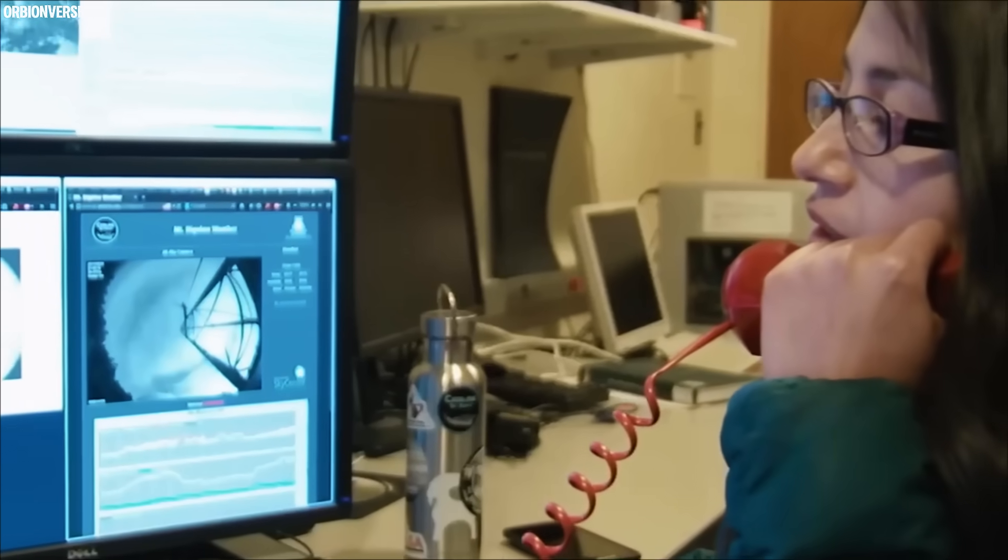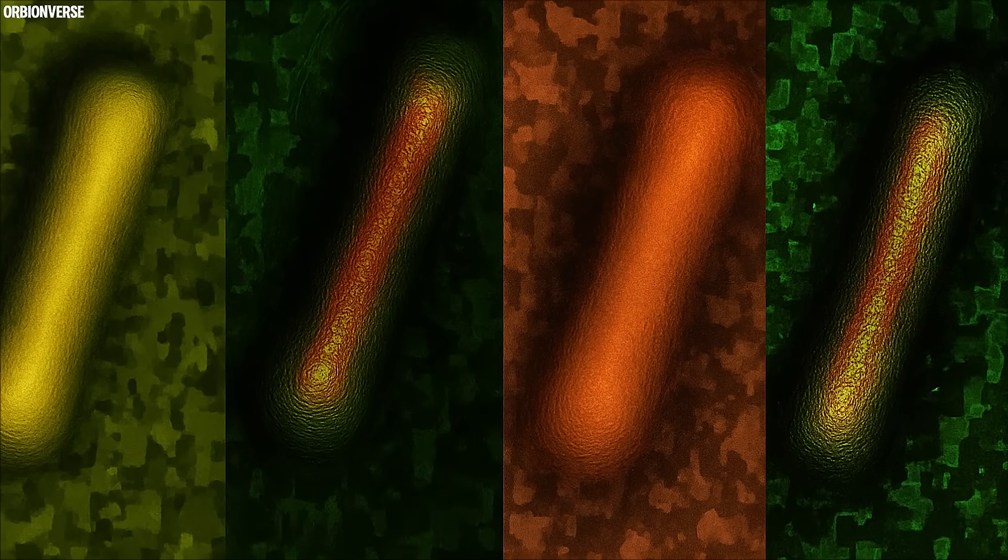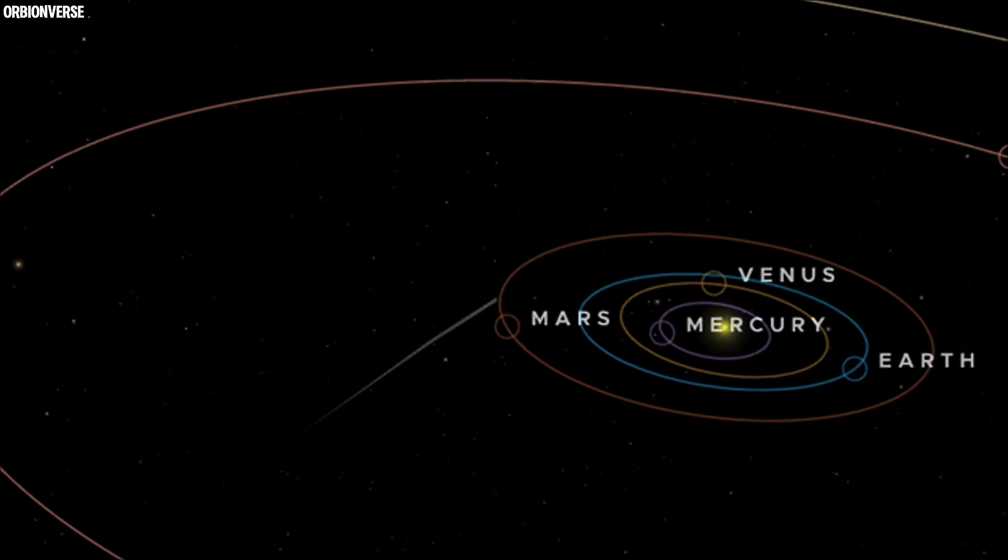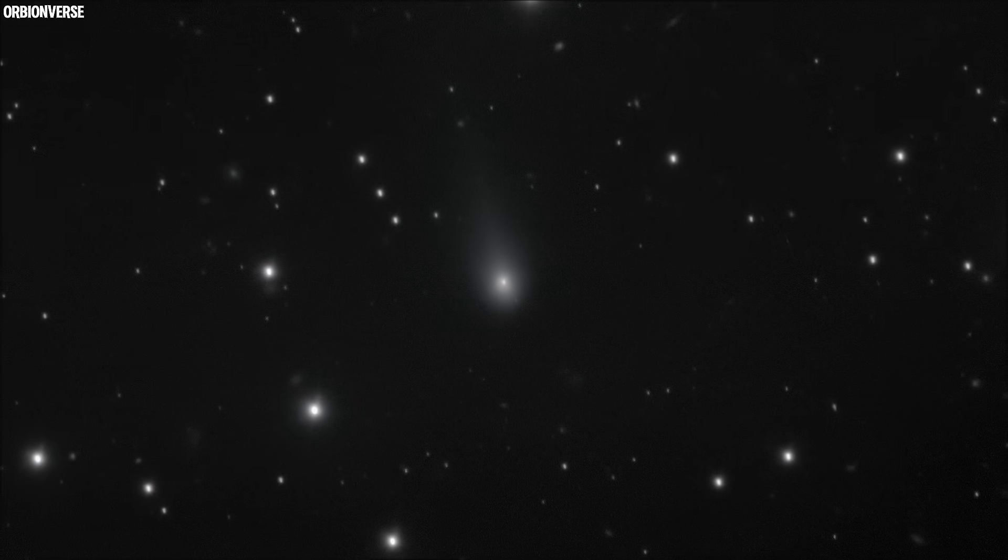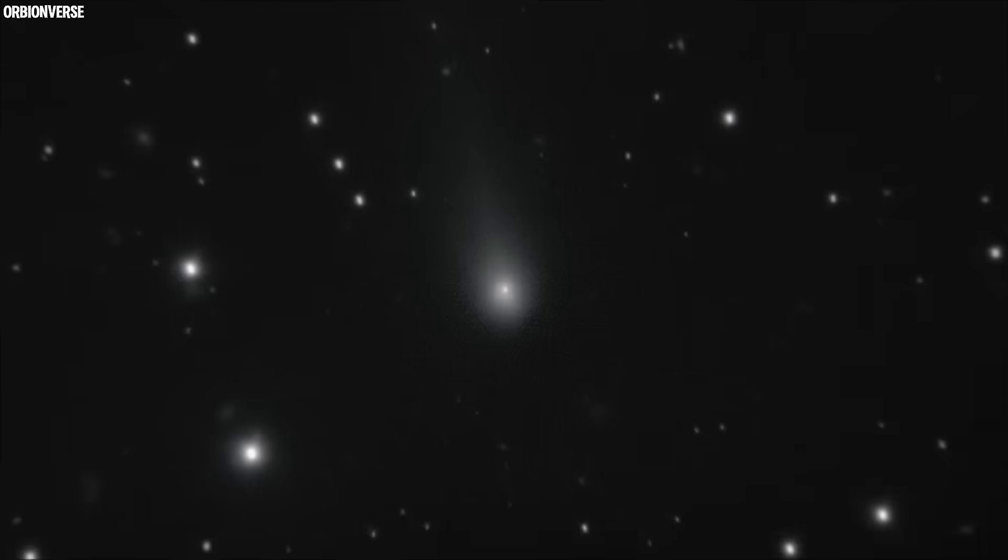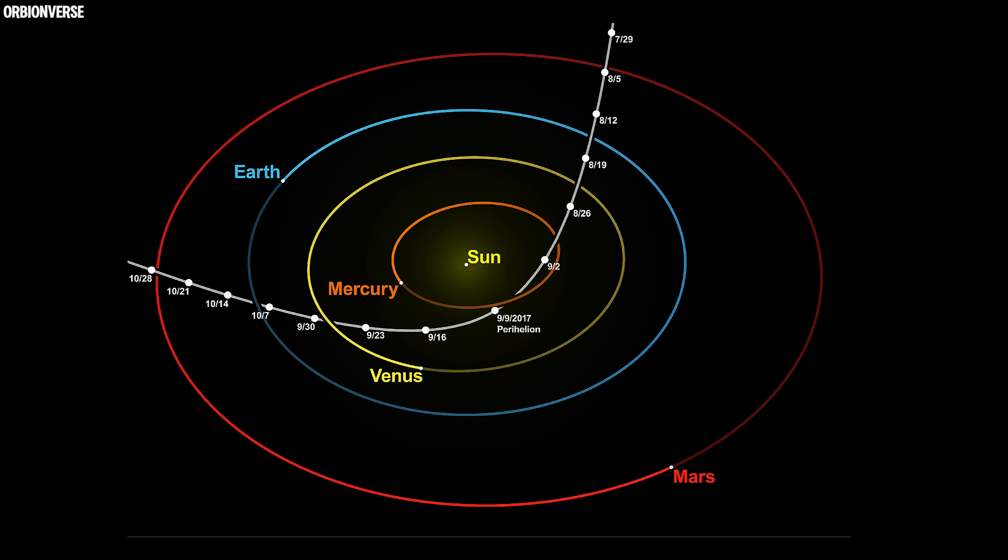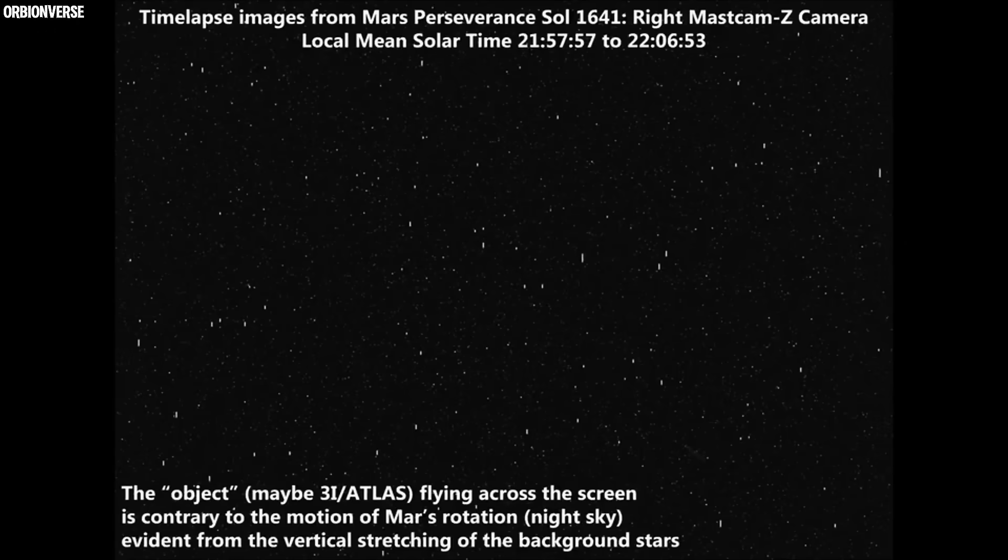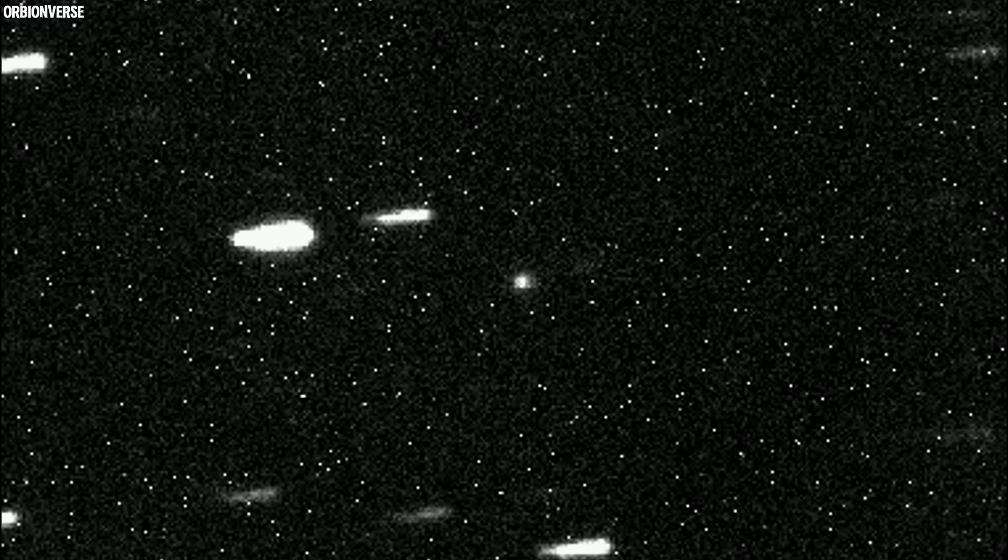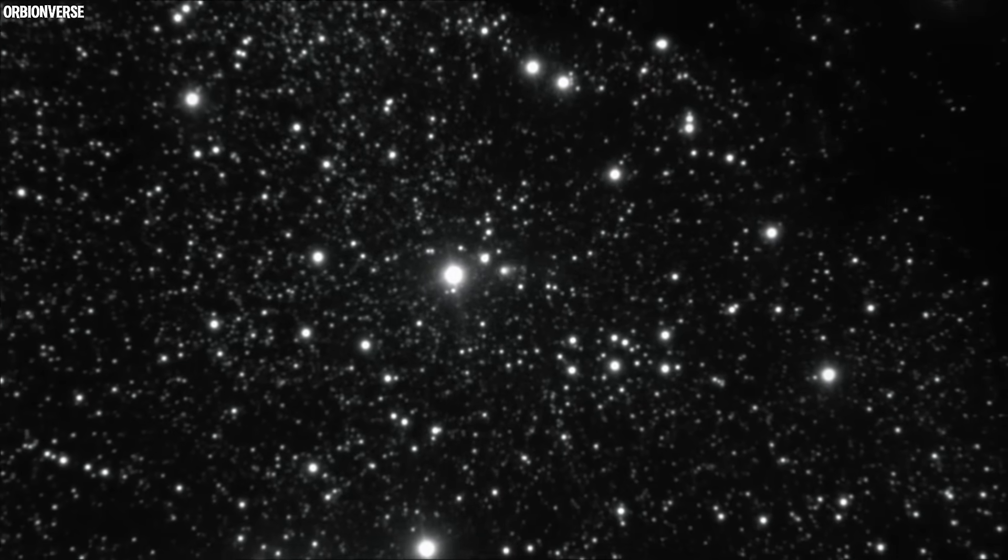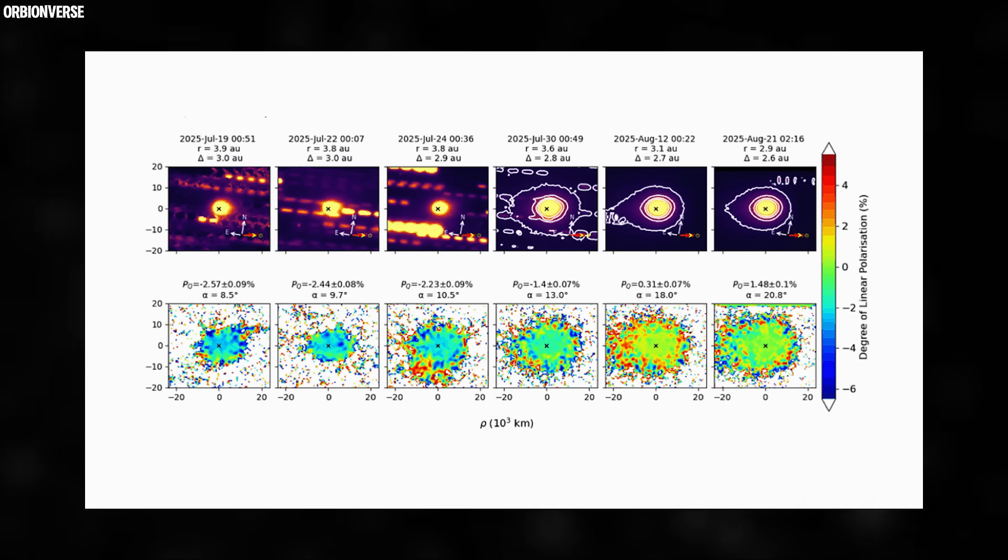Could it be more than a coincidence? Could it be a vessel, a probe, or a fragment of something even larger? To fuel that fire, consider its motion. Mars orbits the Sun at around 24 kilometers per second. 3I/ATLAS, however, moves in a retrograde orbit, traveling in the opposite direction, at nearly 67 kilometers per second relative to the Sun. The combined relative velocity between Mars and the object exceeded 90 kilometers per second. At that speed, in the 10 minutes of the nav cam's stacked exposures, 3I/ATLAS would have streaked about 50,000 kilometers across the Martian sky, exactly the length of the glowing stripe in the image. A perfect, logical match.